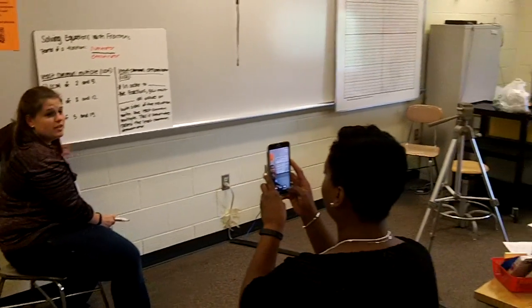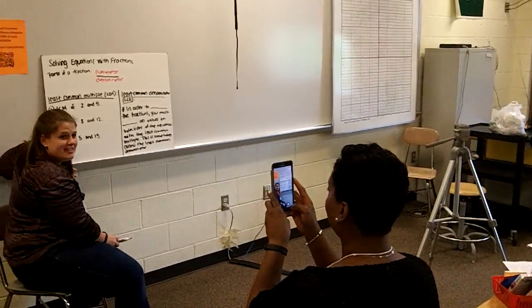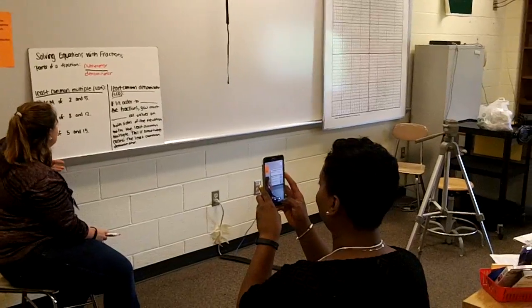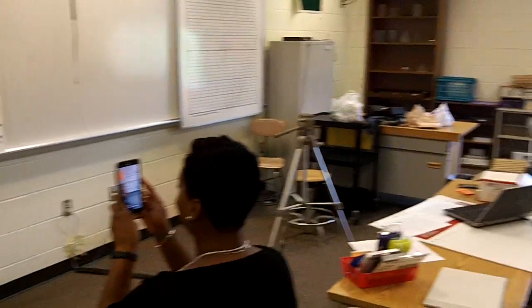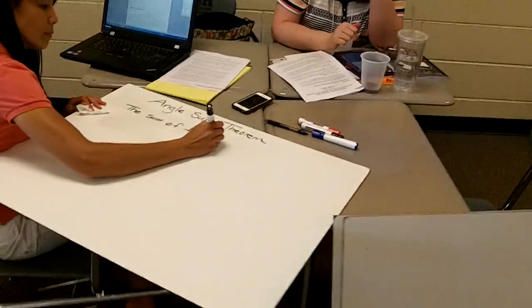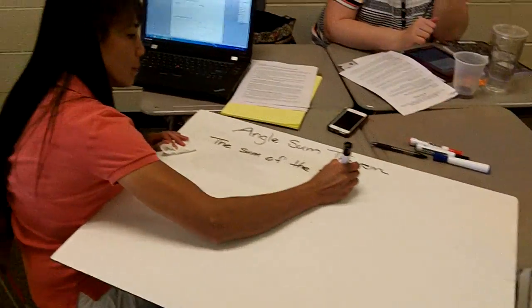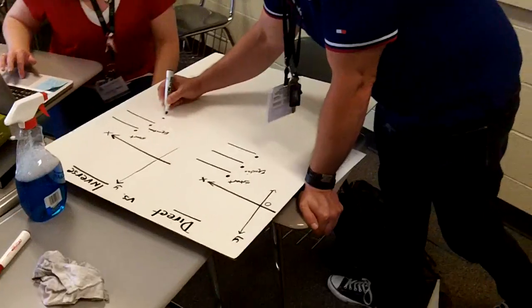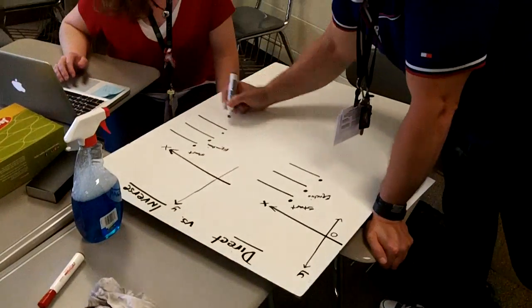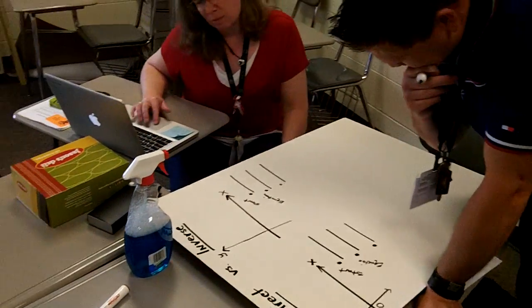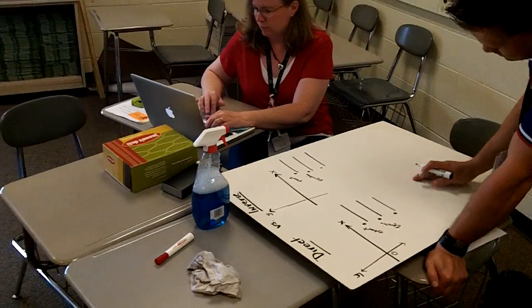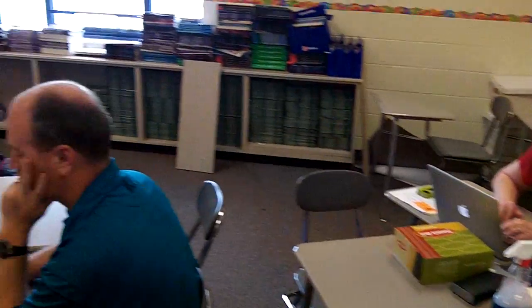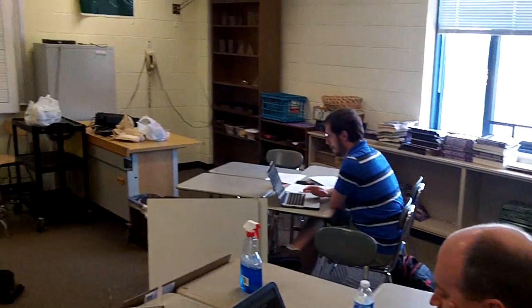So first, we have to think about multiples. Multiple is there is multiple. Two times two is four. So we have two, four, six, eight, ten.